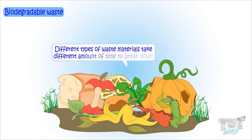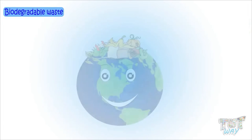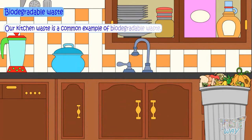Different types of waste take different amounts of time to break down. All types of waste that break down in weeks or months and become part of the soil are known as biodegradable waste, and such waste poses no threat to the environment. Our kitchen waste is the most common example of biodegradable waste.